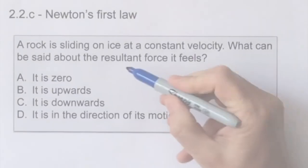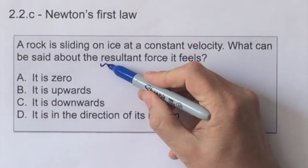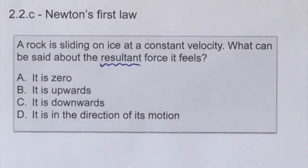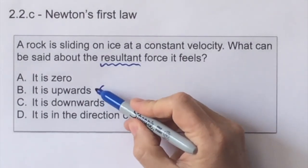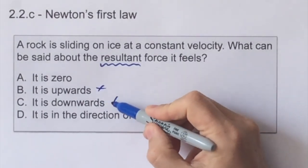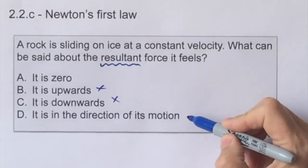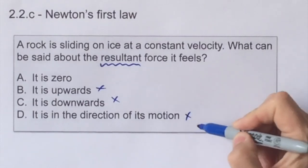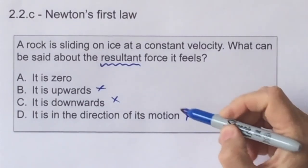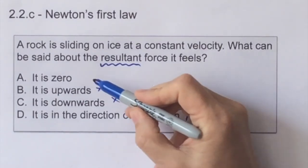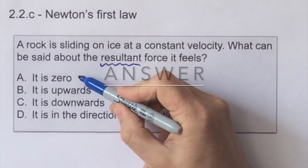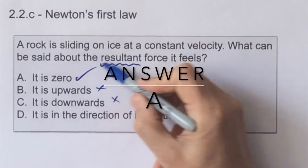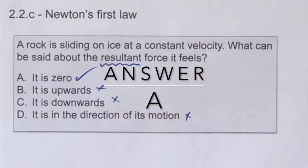In this question, we're interested in the resultant force — not in the individual forces, whether up, down, or horizontal, acting on it. We know it's travelling at a constant velocity, so Newton's First Law tells us that there is no net force acting on it. So the answer is A.